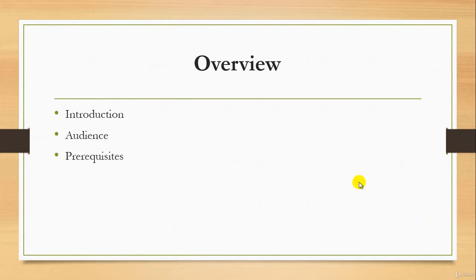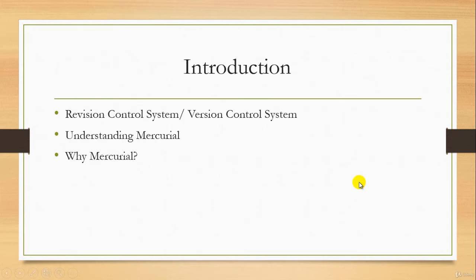The next thing is understanding Mercurial. Let's move on to the introduction. First, what is a revision control system, also called a version control system? A revision control system is a process of managing multiple pieces of information with various types of files and code base used by developers.